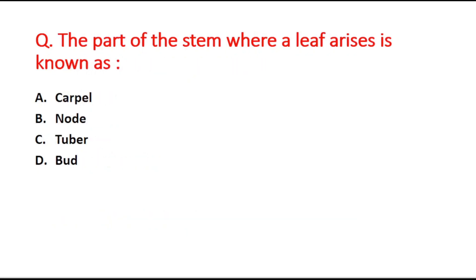Next question: the part of the stem where a leaf arises is known as blank. Option A is carpel, option B is node, option C is tuber, and option D is bud. The right answer is option B, node.